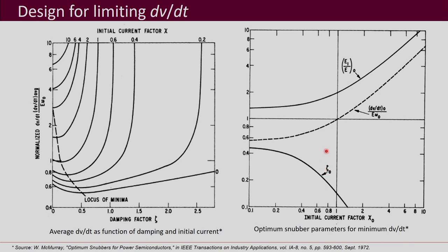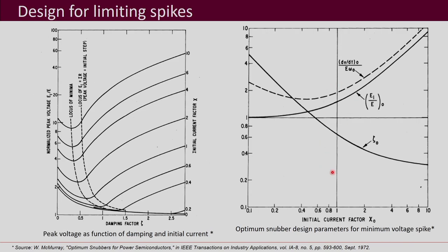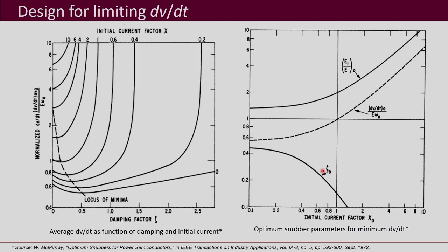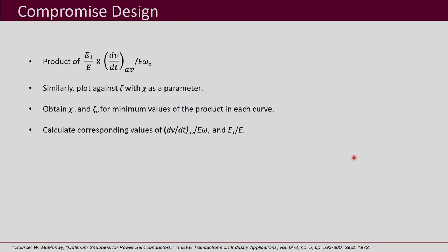In most cases, we would like to limit both dv/dt and the spike voltage. Observing both graphs, limiting the spike gives a higher damping ratio compared to limiting dv/dt — the zeta0 obtained in the two cases for minimum E1/E and minimum dv/dt are different. So if we want to limit both, we have to do a compromise, trying to reduce both to a satisfactory extent somewhere in between rather than finding the minimum of each separately. This is called the compromise design.